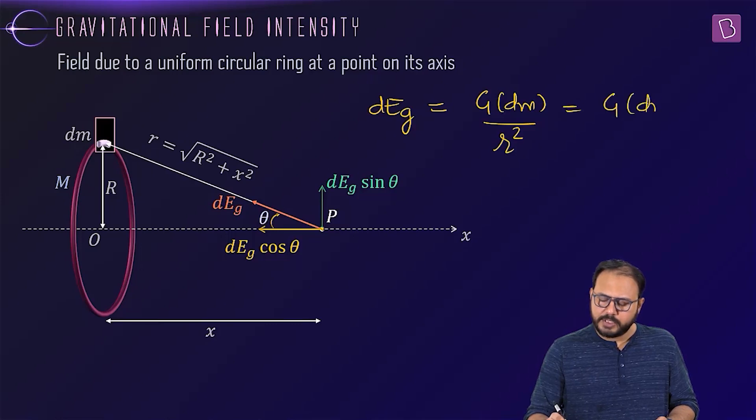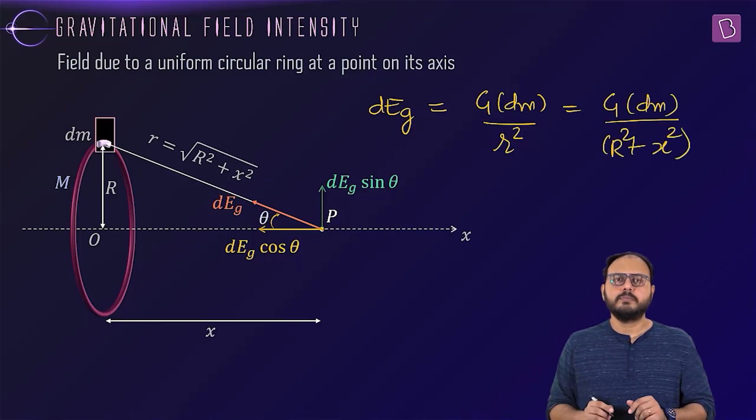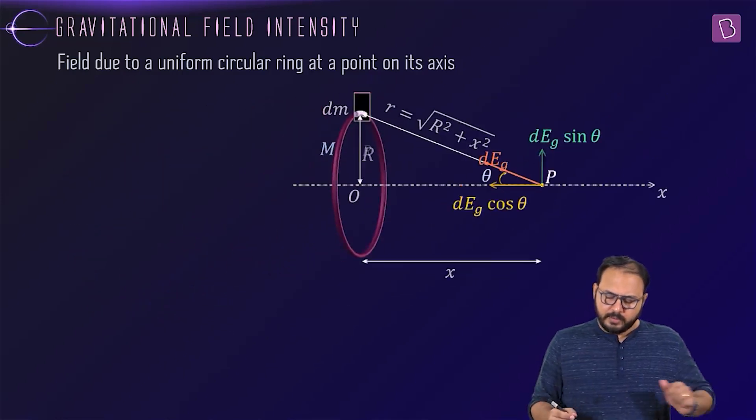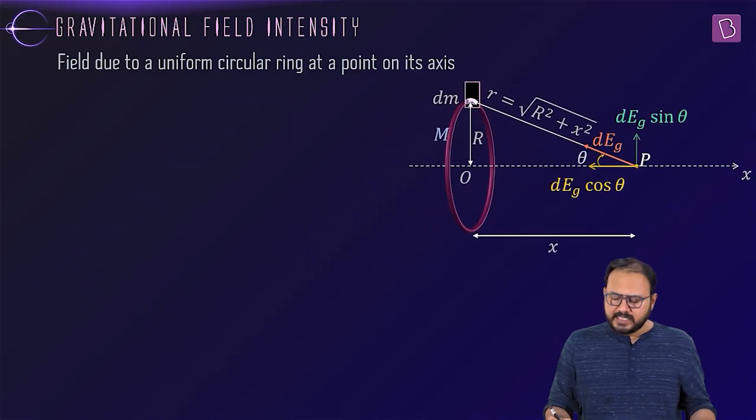If you want, I can also say gdm upon capital R square plus x square. All okay. All okay, sir. That's your dEg.